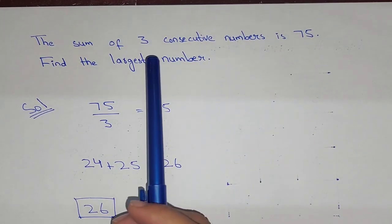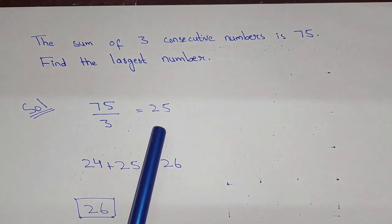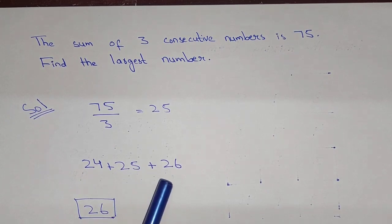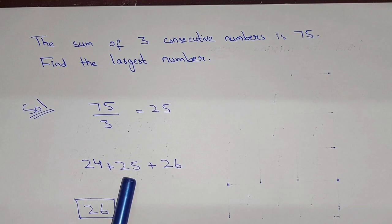So 75 divided by 3, this is 25, and then we will find the one number larger and the smaller. So 25 plus 1, that will be 26, and 25 minus 1, that will be 24.